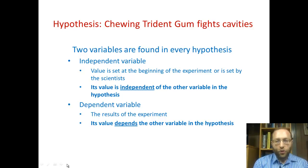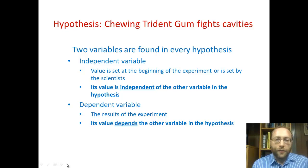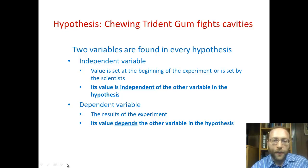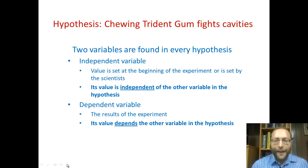Is the type of gum that you're chewing determined by the cavities — whether or not you get cavities? You can tell that the type of gum you're chewing, be it Trident or another kind, is the independent variable. It's set by the scientists — you would decide what kind of gum is being used and who gets which. Whether or not the cavities are successfully fought, or how many cavities someone got, would be the dependent variable — that is your results.